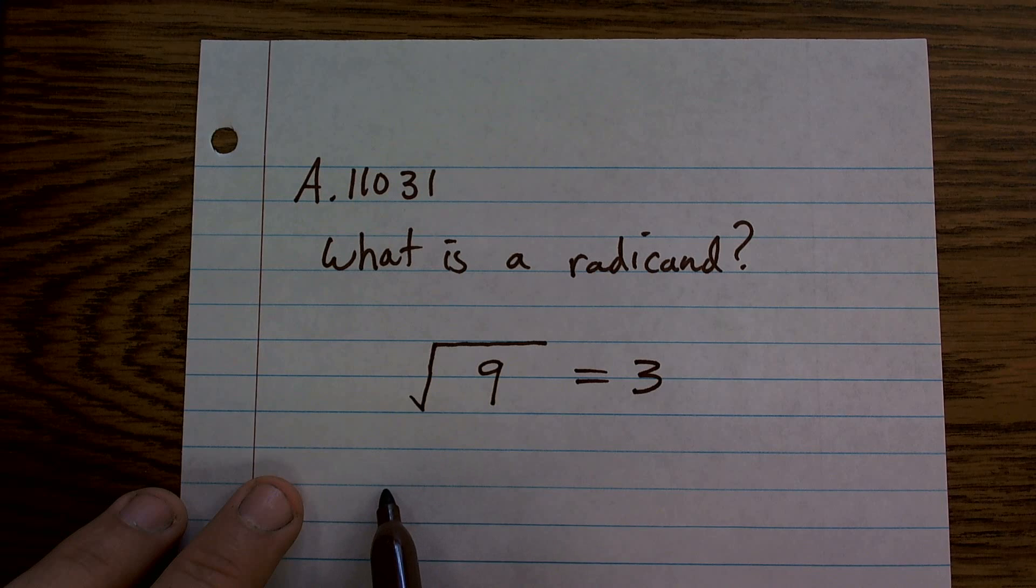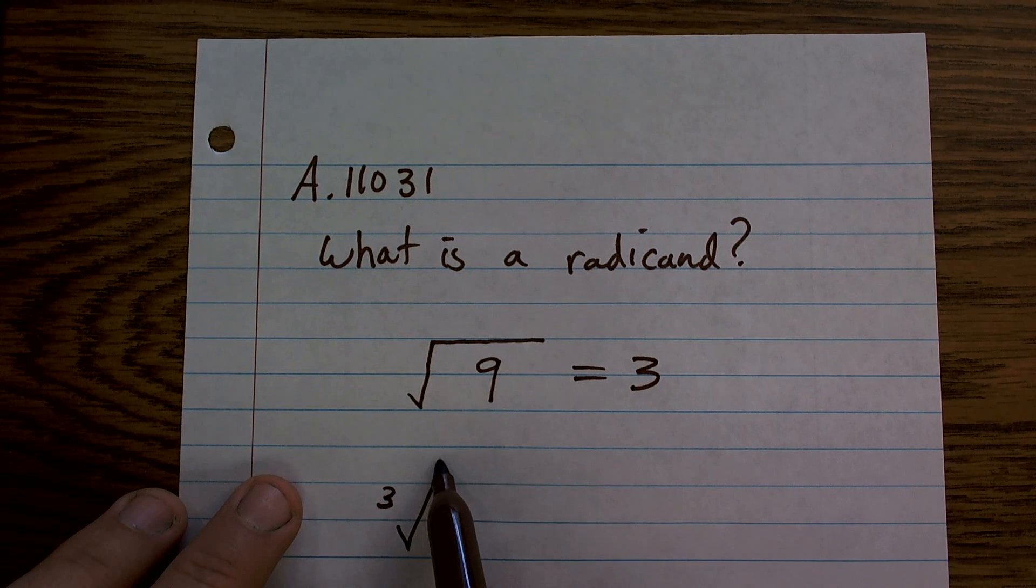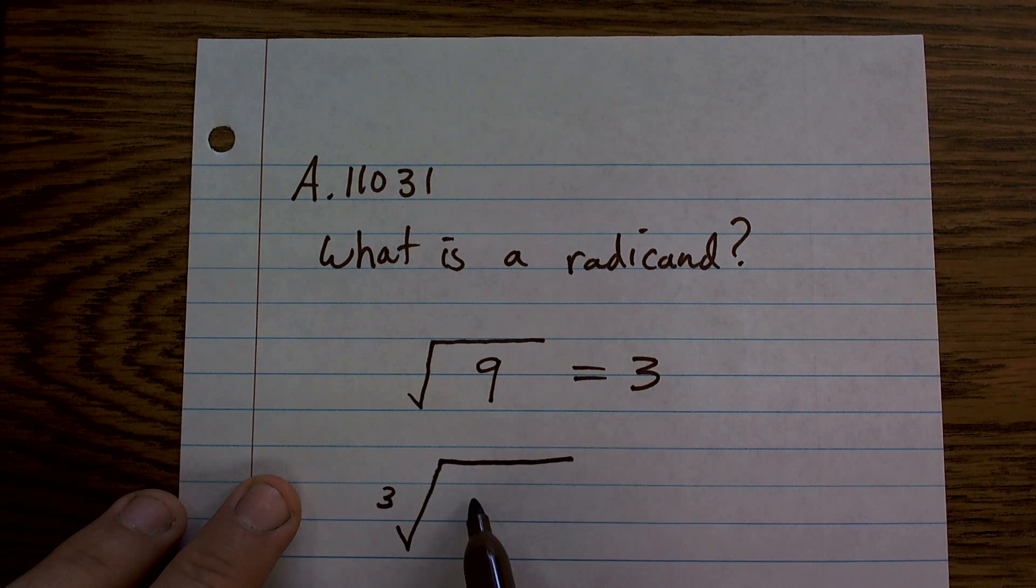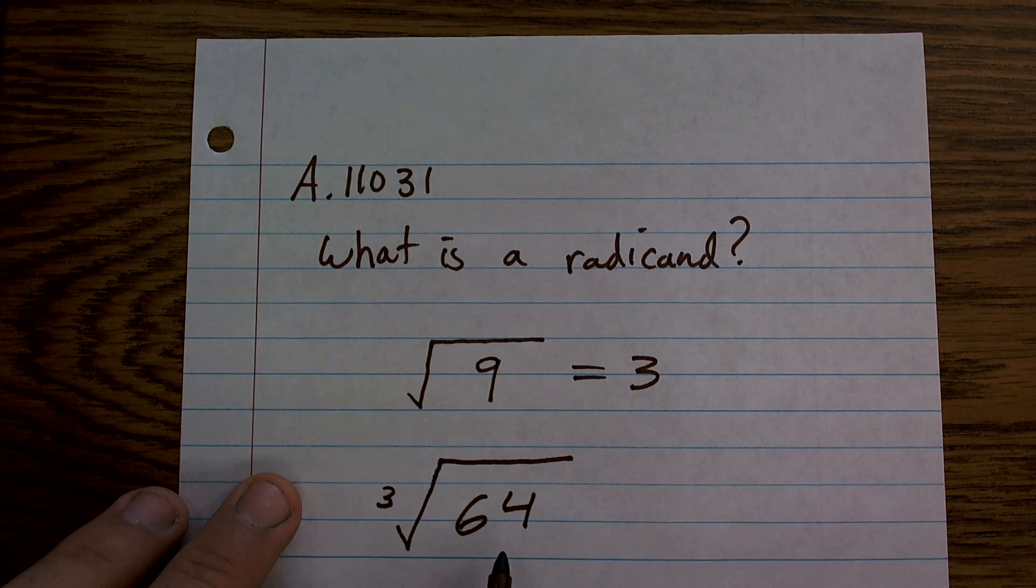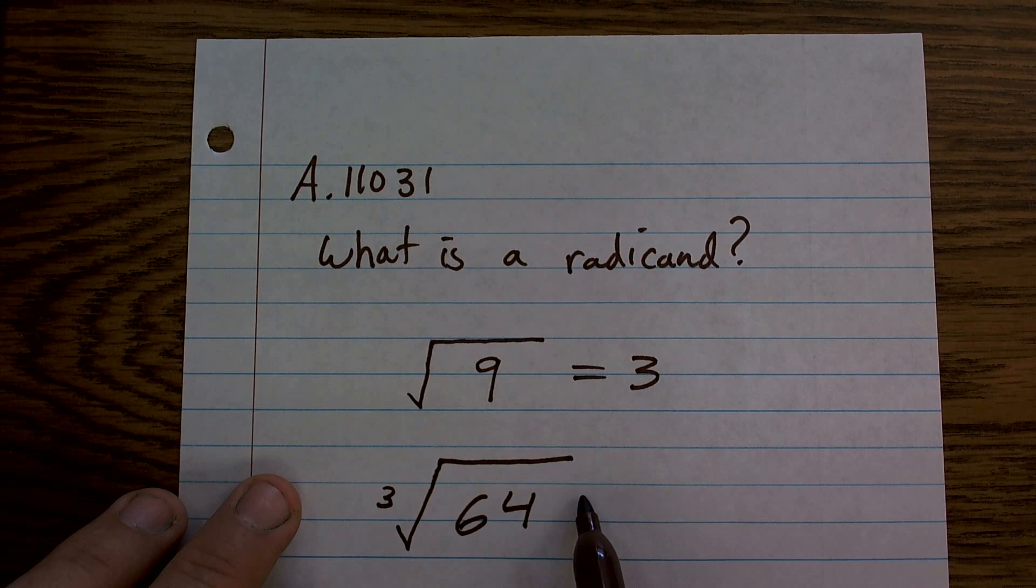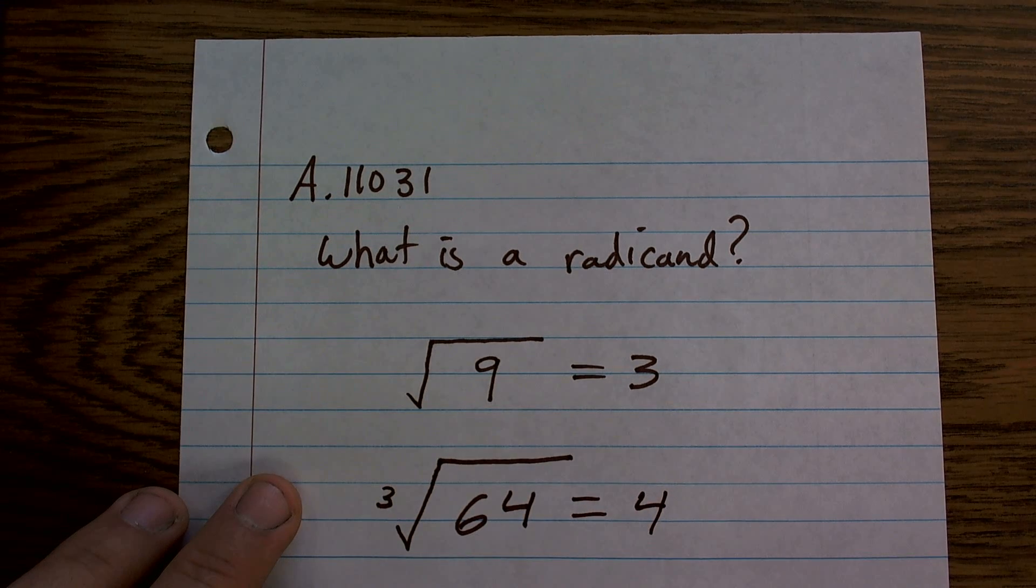Our radicand could also be in the center of a cube root. So here, if I ask you what is the cube root of 64, again, 64 is going to be my radicand. And this answer is equal to 4.